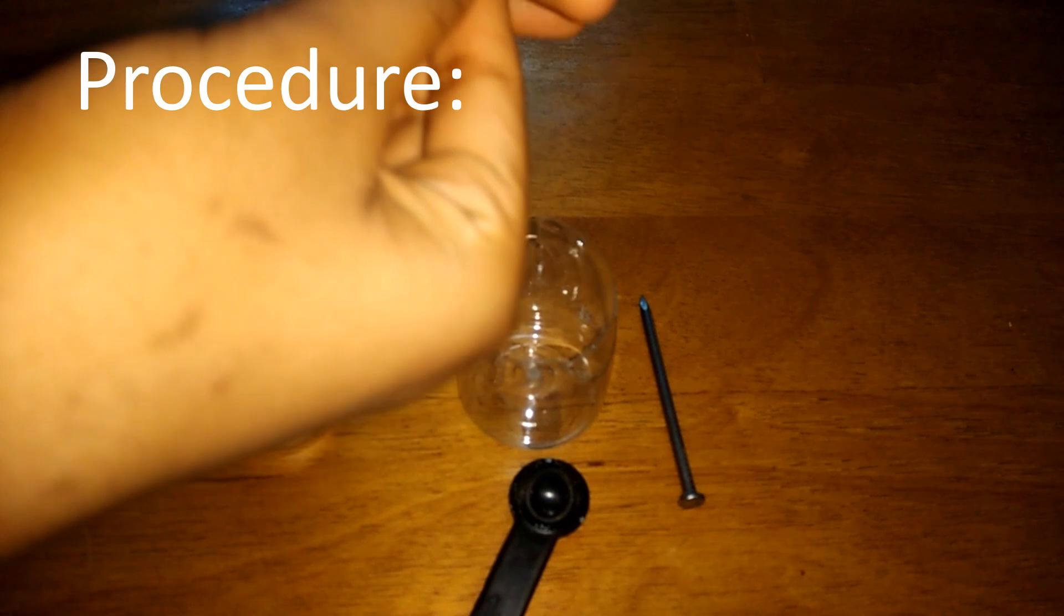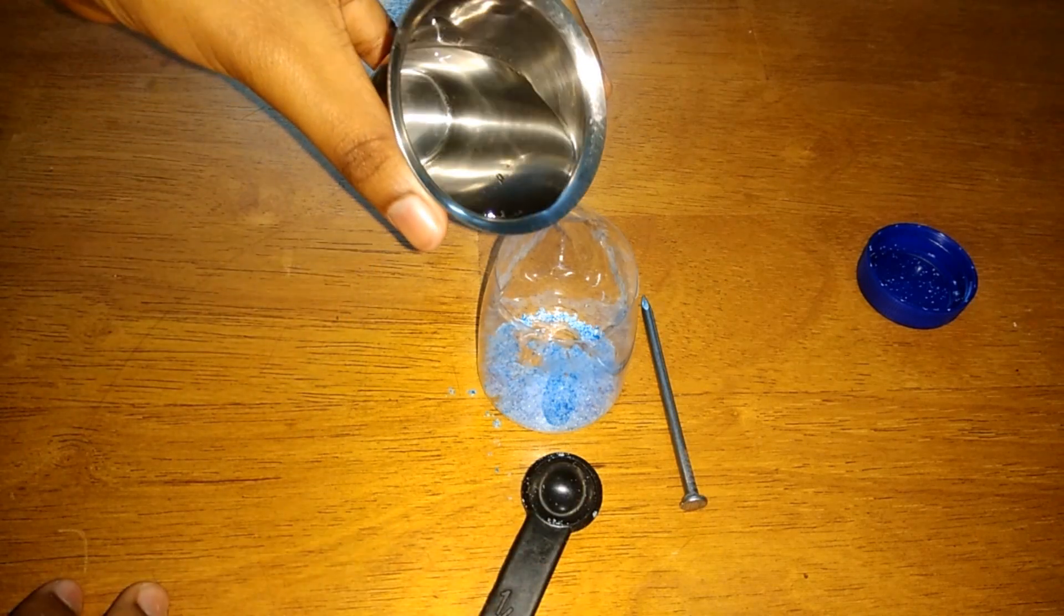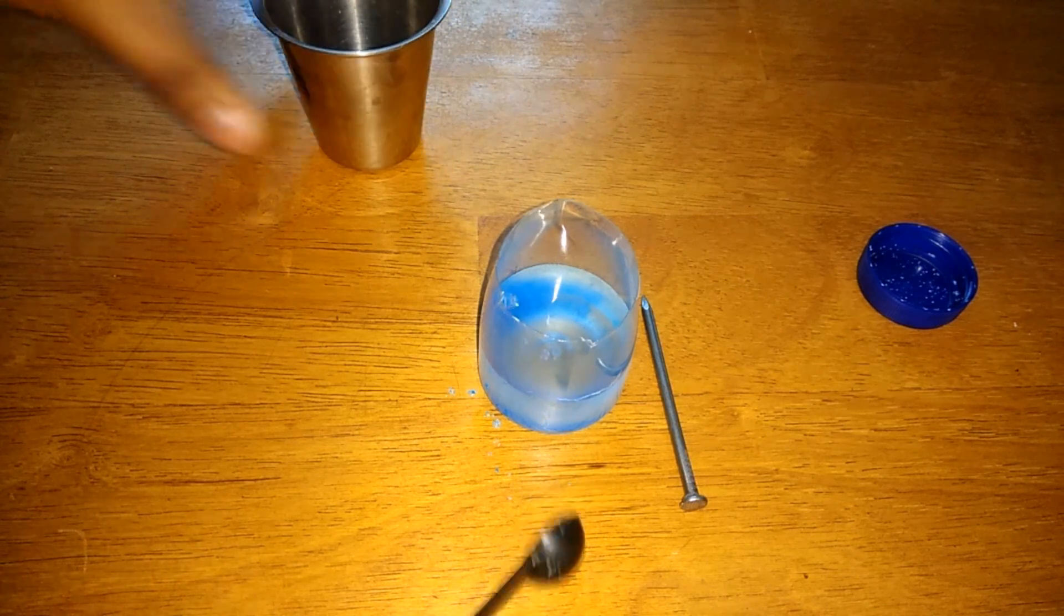First I am going to take the copper sulphate and I am going to put it into the container. Now, I am going to add some water. I am going to stir it well.